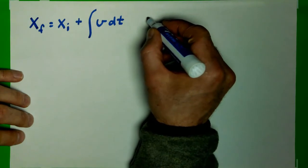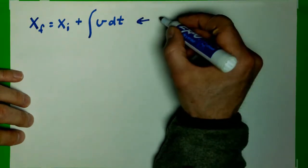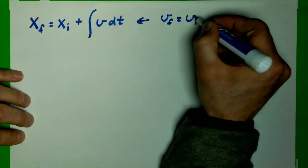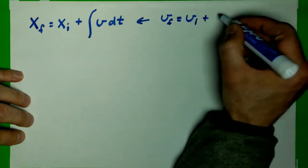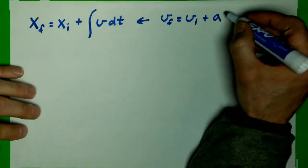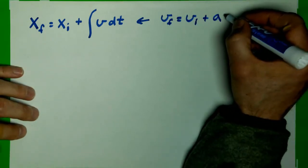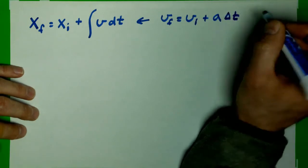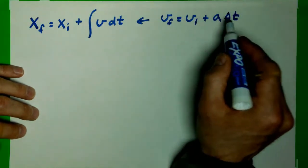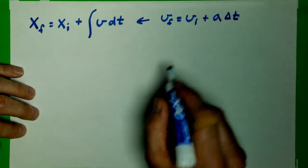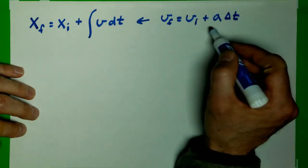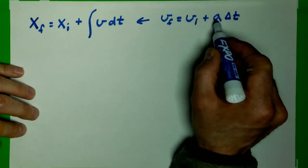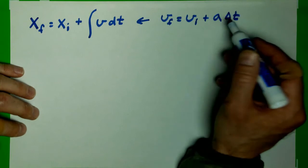We also know that velocity is equal to whatever it started with plus acceleration times our time period. I'm going to put a delta t here. So this is delta v equals acceleration times delta t. Now we could have actually written this as an integral with a dt, but we're going to focus in this course only on cases where the acceleration is zero, where it's constant.